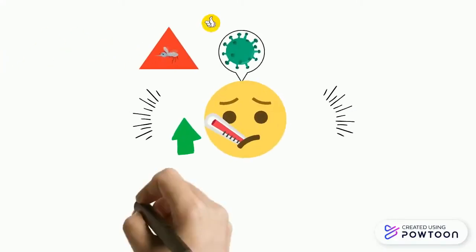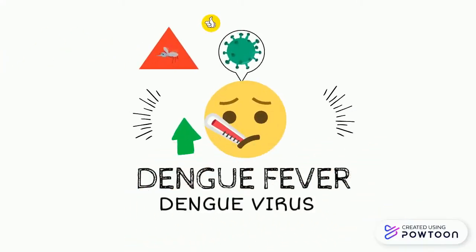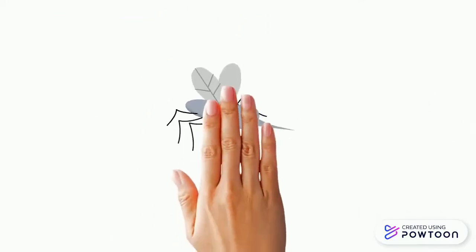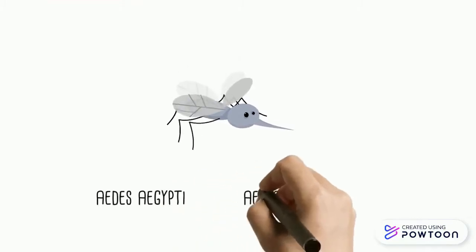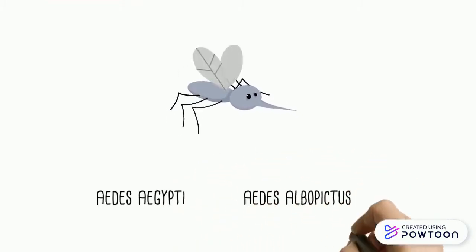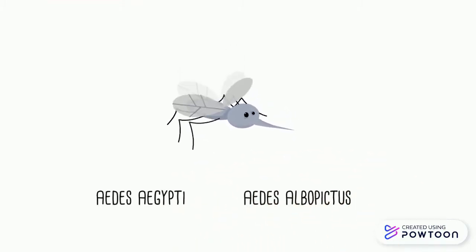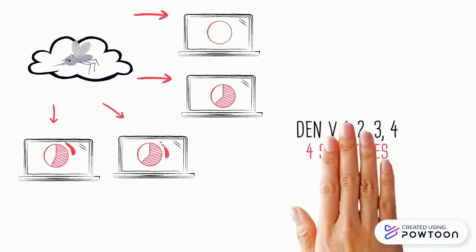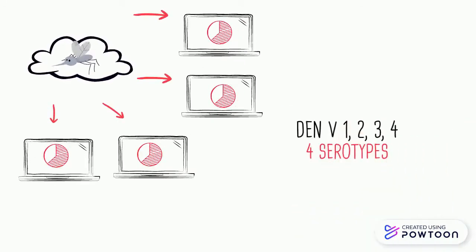Dengue infection is a viral disease caused by Dengue virus. Dengue virus is transmitted by mosquitoes — their names are Aedes aegypti and Aedes albopictus. This virus has four serotypes in Malaysia, DENV-1 to DENV-4.